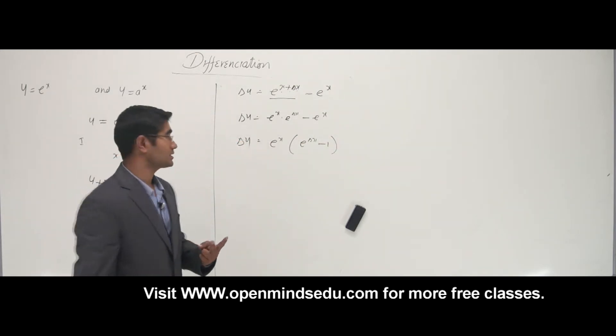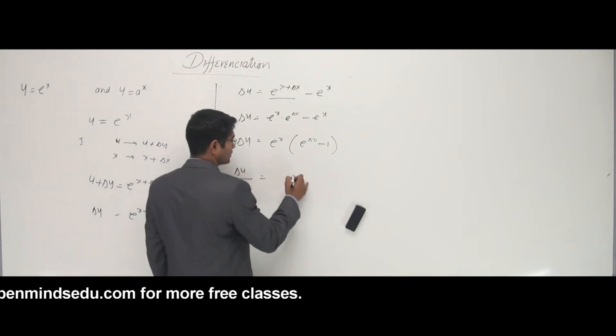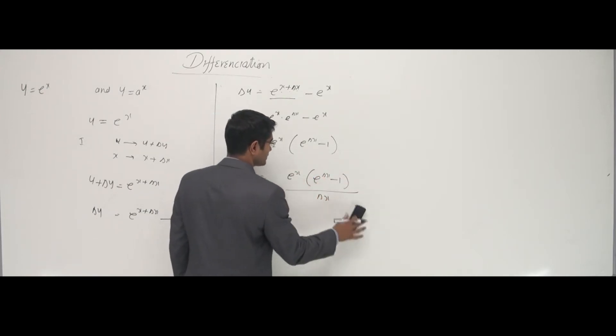What is the second stage? It's all about dividing both the sides by delta x. So I have e power x and e power delta x minus 1 by delta x.